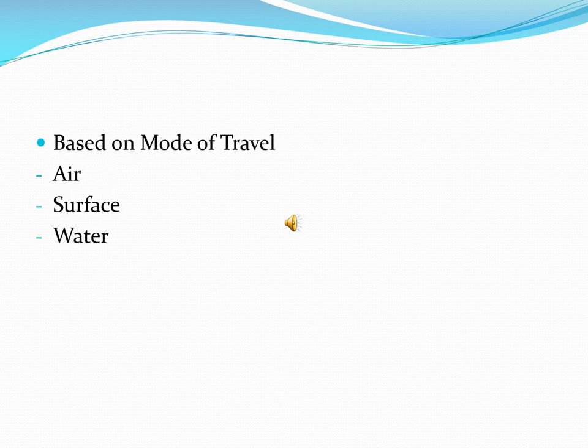This typology is based upon the mode of travel used by the tourist. In simplistic terms, the transport used is either air, surface, or water. Based on mode of travel, there are people flying by air, people using surface transport such as roads or railways, and water tourists — for example, cruise tourists.